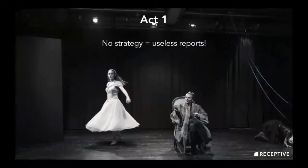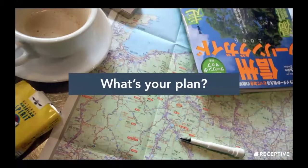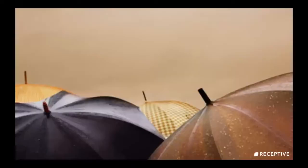Just to frame things a bit — some people have a really strong strategy in place already and some people need a bit of support in this area. The summary really is that you just need a plan. You can't really use the reports in Receptive well unless you have a plan in place. It could be a week long, quarter long, or even a rough plan for the whole year. It doesn't matter what your job role is — you've got to understand what the goals are for 2018 because that is going to affect the data you'll use in your Receptive account.